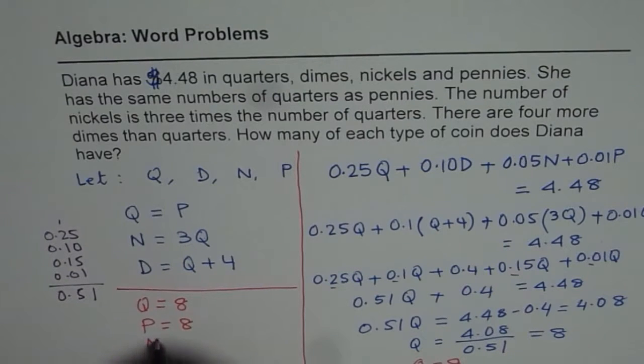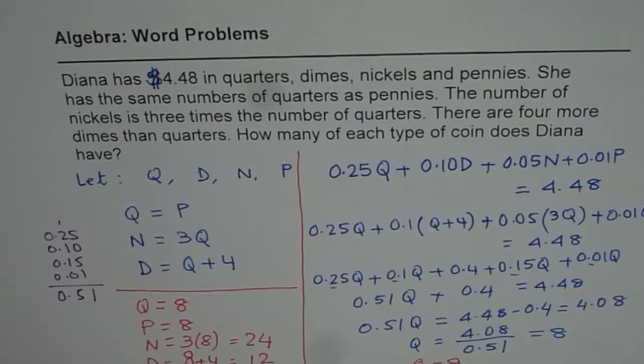How many nickels? Nickels are 3 times 8, that is 24 nickels. And dimes are 8 plus 4, which is 12.